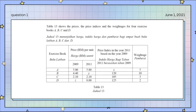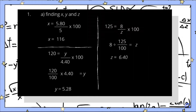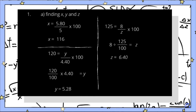Question 1 is based on Table 13, which is the table shown now. For question A1, we are asked to find the values of X, Y, and Z. For X, we divide 580, which is the price per unit for the year 2011, by 5, which is the price per unit for the year 2009, and then multiply that value by 100. So the final answer is X equals 116.